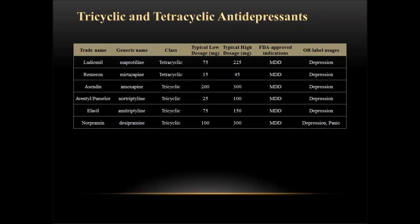Taking a look at the tricyclic and tetracyclic antidepressants, we don't see these terribly often. Remeron is one you'll see occasionally, and amitriptyline — Elavil — is another you'll see fairly often. All these medications are very similar in terms of approved indications and off-label usages. All of them are approved for major depressive disorder, and the most common off-label usages are depression, and for Norpramin also panic disorder.